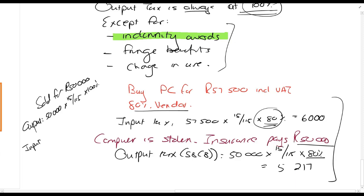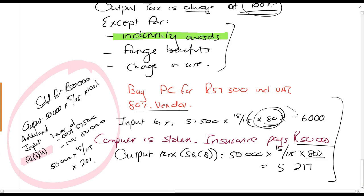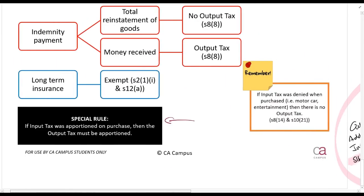You would then claim input tax, additional input tax under section 16.3.h on the lower of cost, 57.5, or market value, if that was the 50,000. So you would say 50,000 times 15 over 115 times - we only claimed 80% originally - so times 20%. Guys, this is section 16.3.h, which you've already studied and you should know that. If this is new to you or surprising, you must go back to that section.